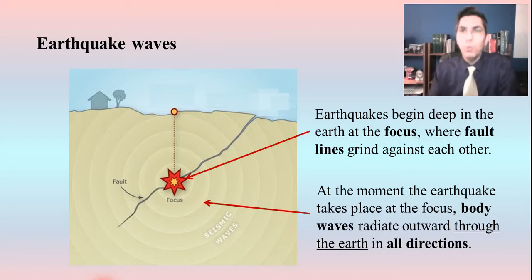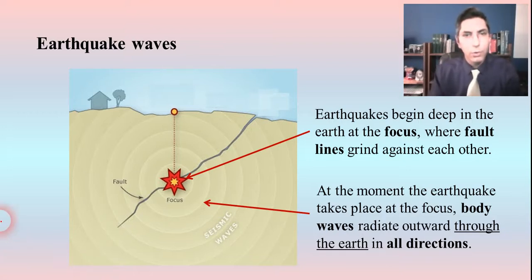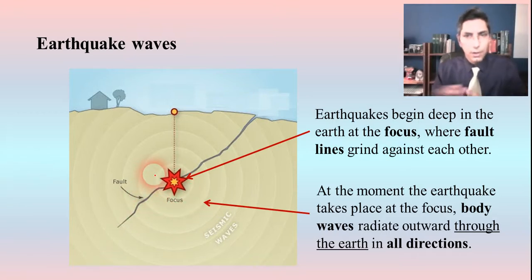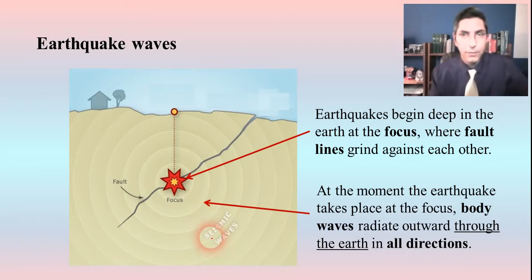At the moment that happens at the focus, there are body waves that radiate directly through the earth in all directions. That's what's symbolized here by these concentric circles — these body waves are radiating out. These body waves are very fast; we'll talk about how fast they are in just a second.